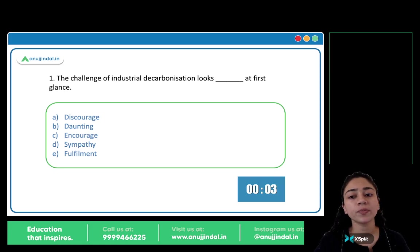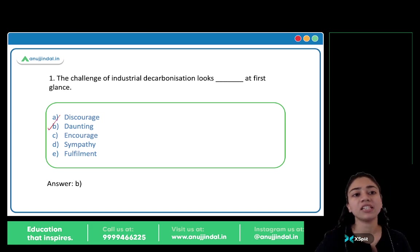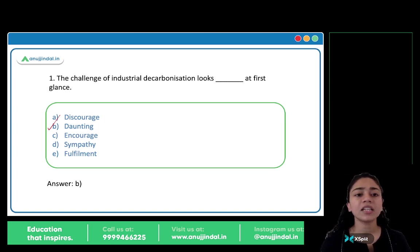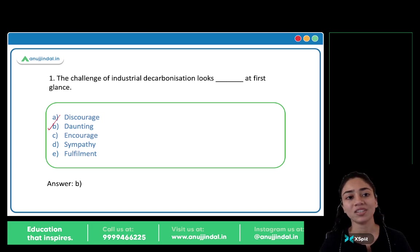The correct answer is B, daunting. Daunting means challenging, difficult. The challenge of industrial decarbonization looks daunting — looks difficult at first glance. Discourage, encourage, sympathy, and fulfillment are all incorrect options. So B is the suitable answer.